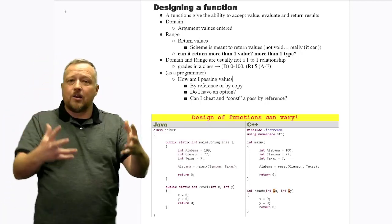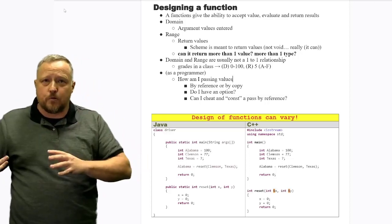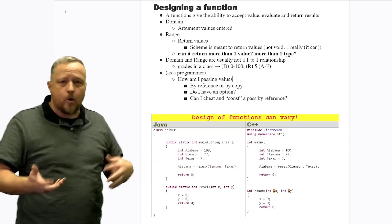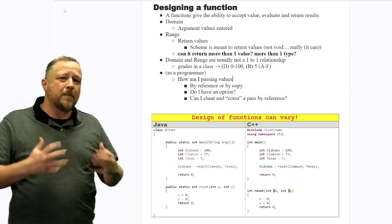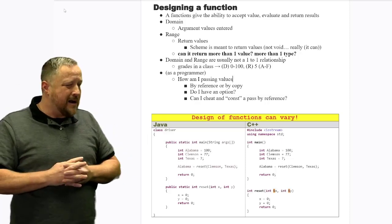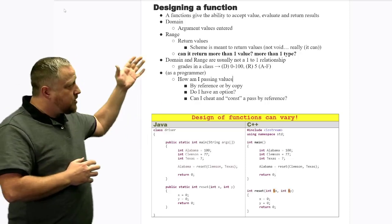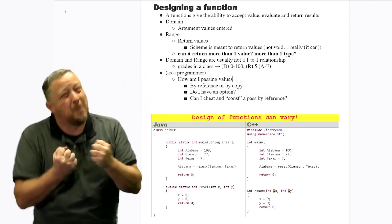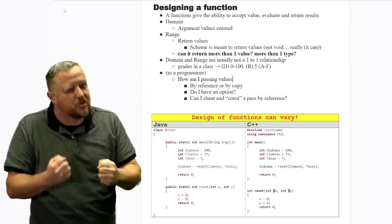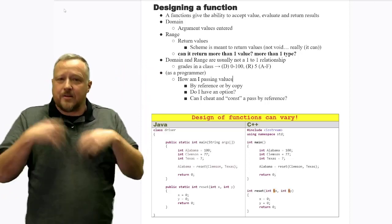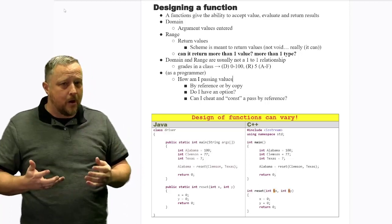But even that alone, that's the difference between a functional programming language and an imperative or OOP or something like that, is what type of returns are you looking for in a function. And most of the time with Scheme, it's supposed to be some type of value that's going to be returned from a function, a very simple one.